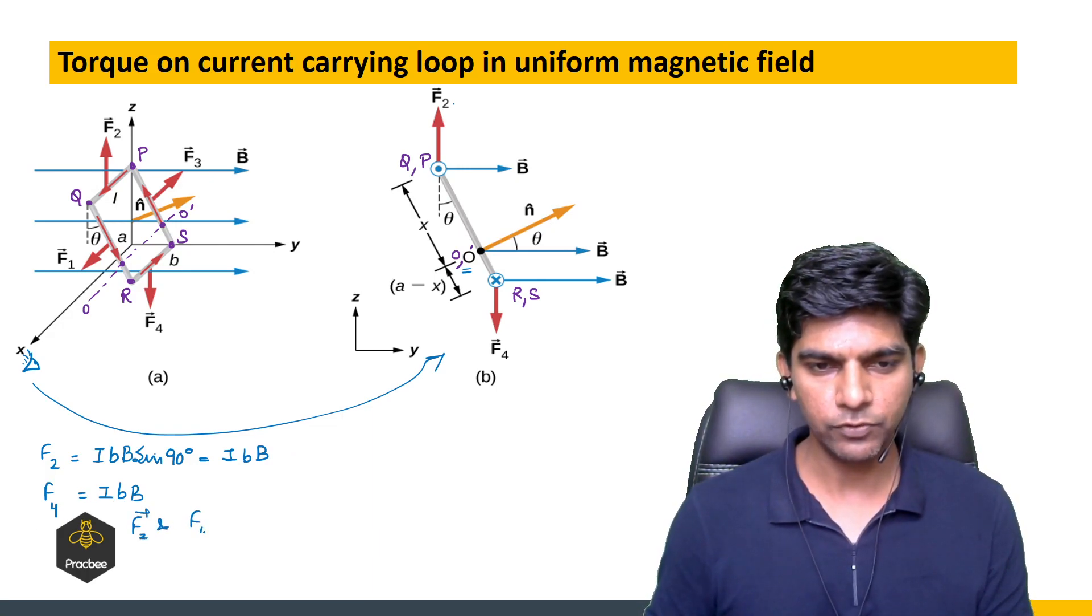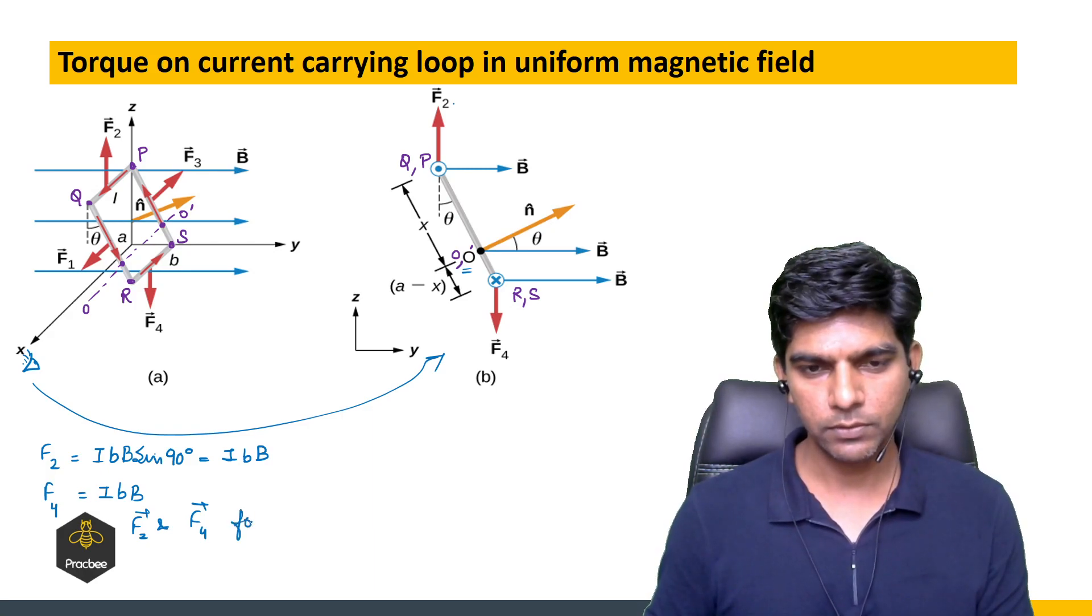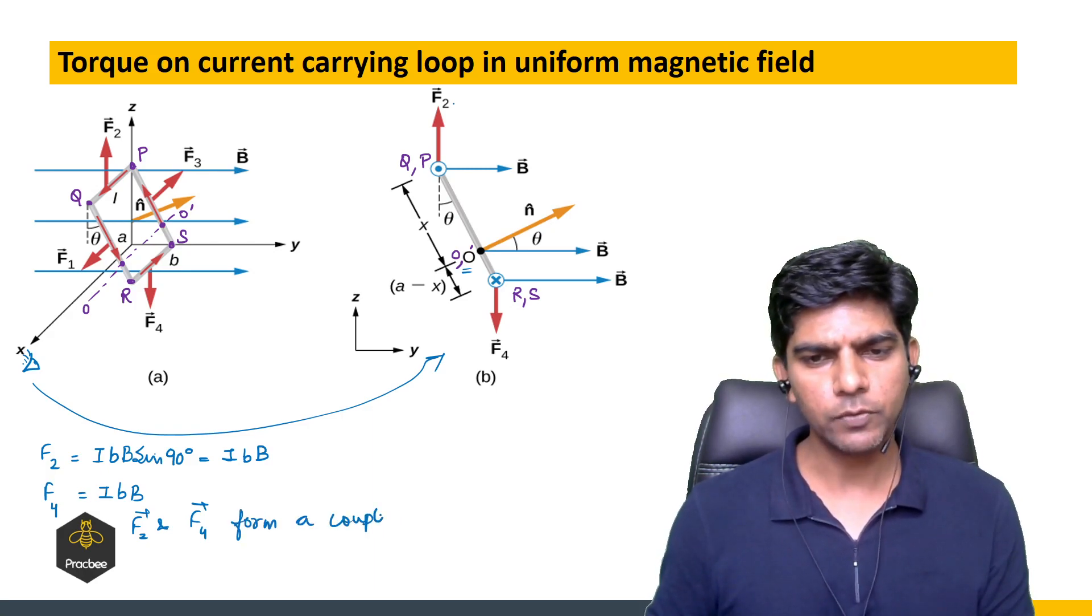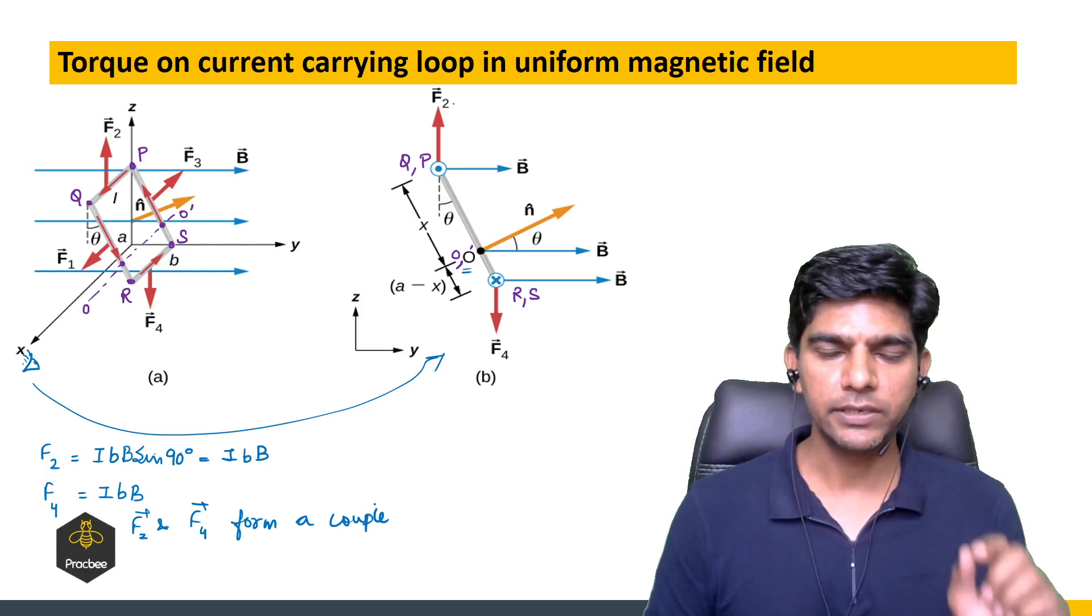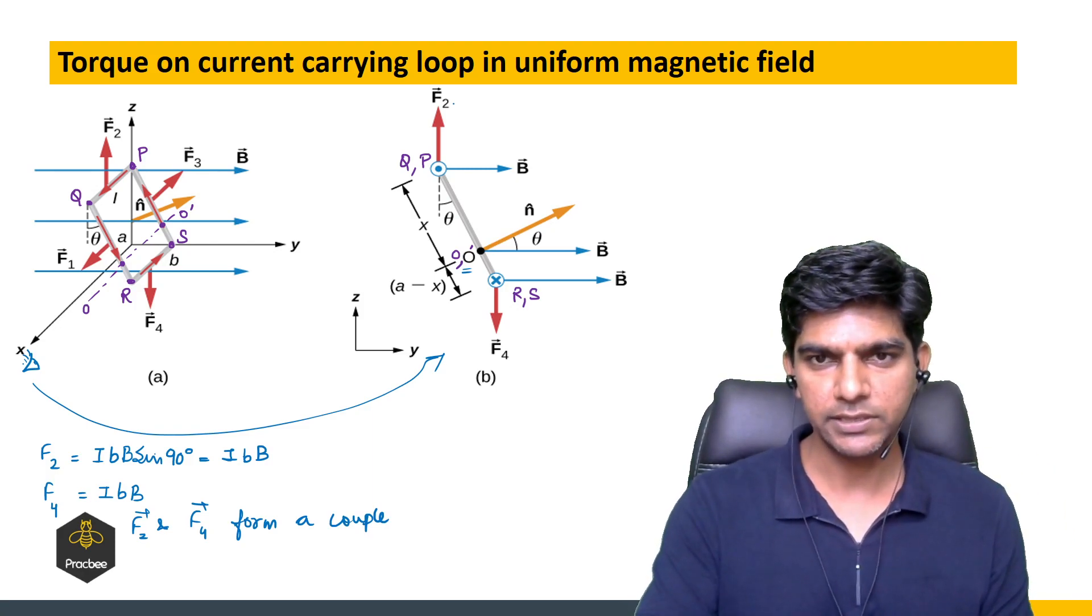So they are forming a couple. F2 and F4 form a couple. If they are forming a couple then we can say there will be a torque. Now let us see what is that torque.